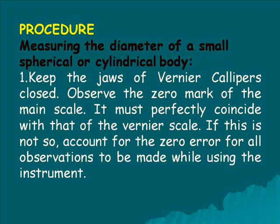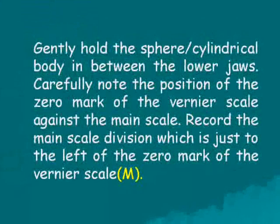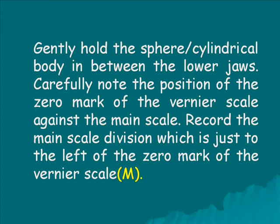Gently hold the spherical or cylindrical body in between the two jaws. Carefully note the position of the zero mark of the Vernier scale against the main scale. Record the main scale division which is just to the left of the zero mark of the Vernier scale, let it be capital L.